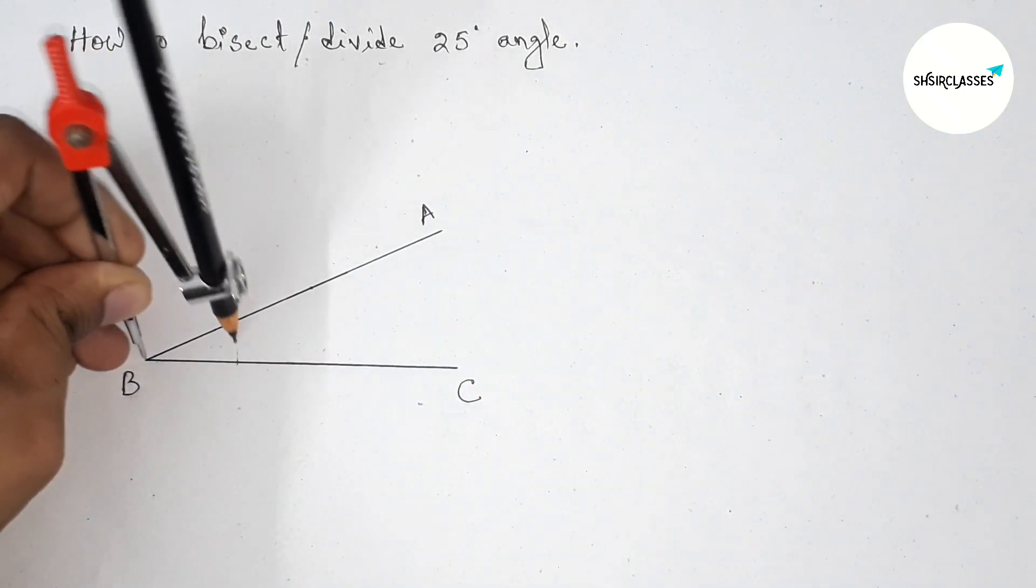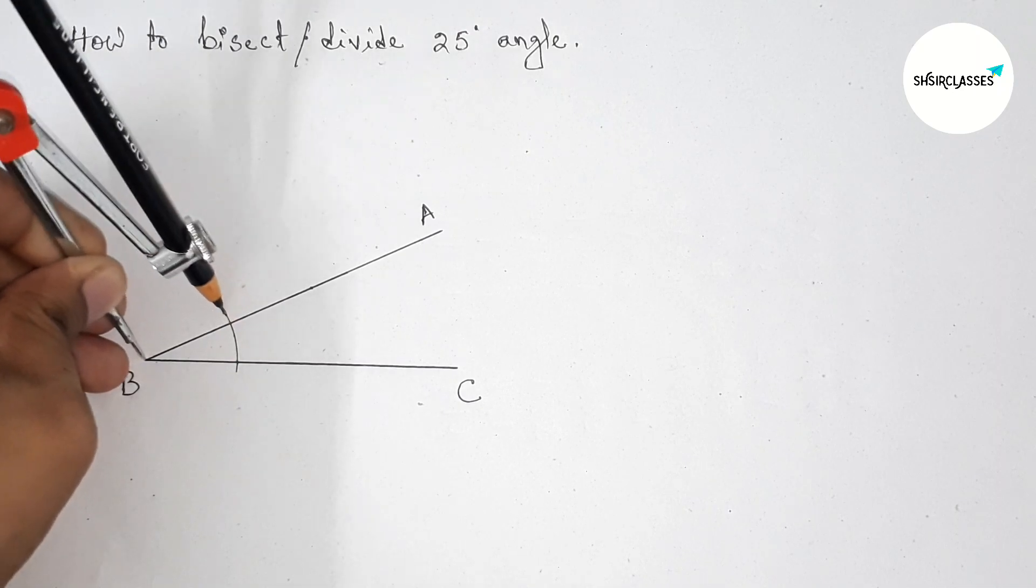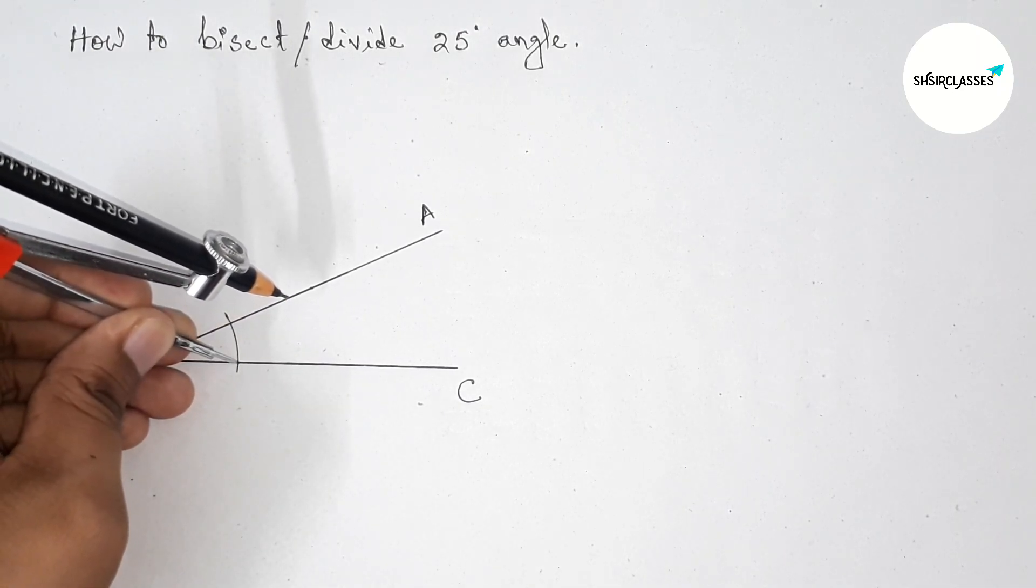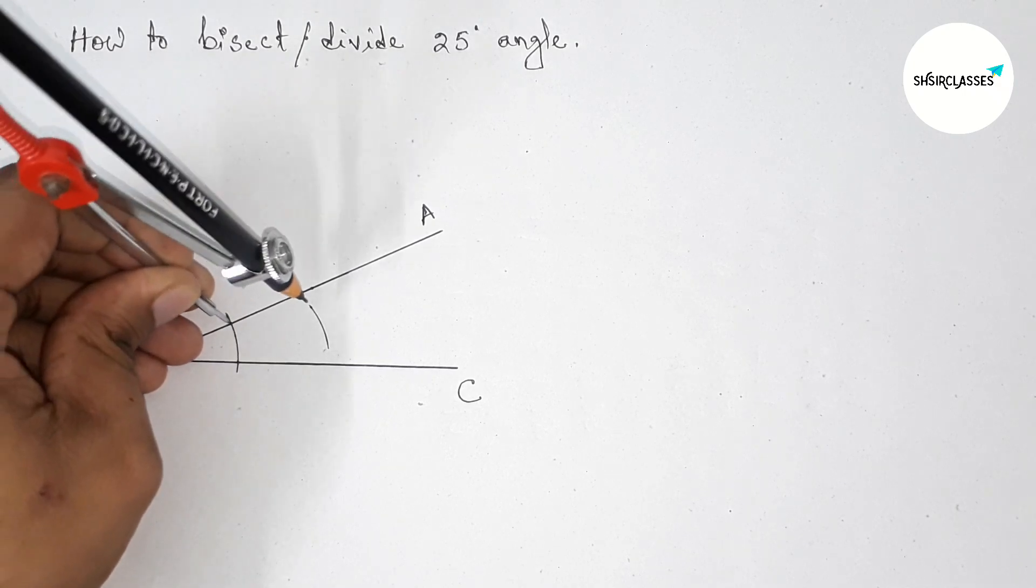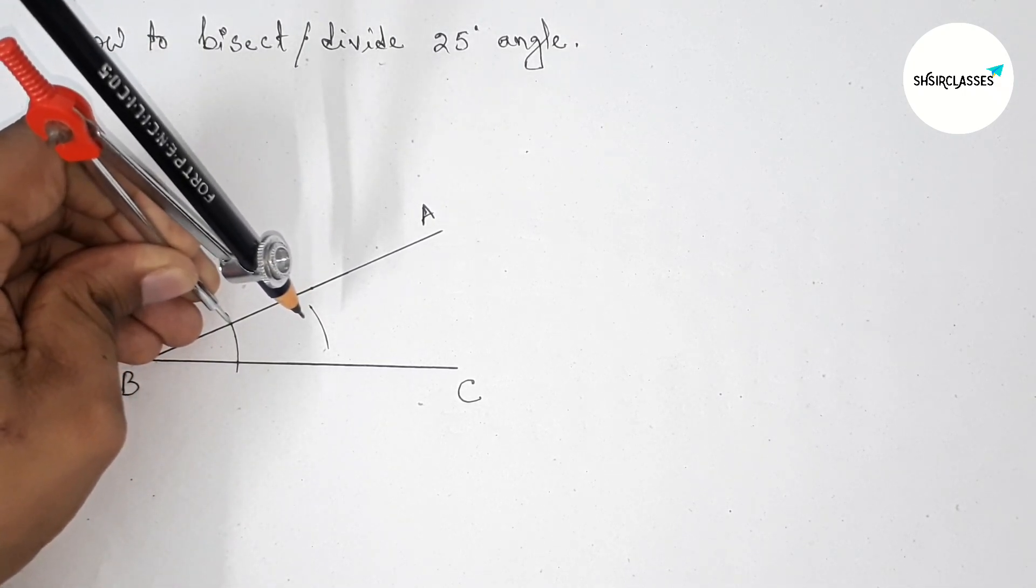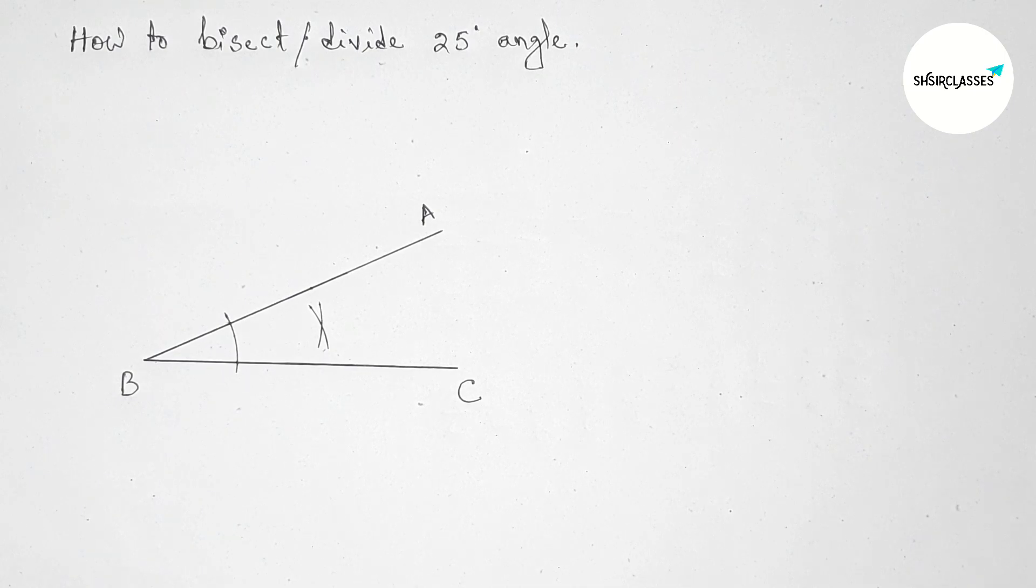Next, bisecting this. So putting the compass on the point B and taking any length and drawing an arc by this way. Putting the compass here with the same length and cut here, and putting the compass here and cut here. Okay, so both the curves meet here at a point.